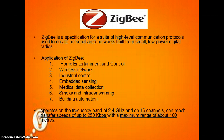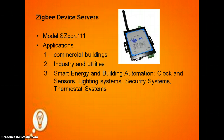Zigbee operates on 60 channels with a maximum range of about 100 meters. This is a Zigbee device server, model SZ4111. Applications include commercial building, industrial and utility use, smart energy and building automation, cloud and sensor lighting systems, and security and thermostat systems.